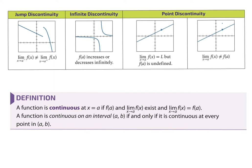Jump discontinuities are visually easy to see and functionally are typically a piecewise function where the endpoints don't meet. The next type is an infinite discontinuity — a non-removable discontinuity that creates an asymptote. Anytime you have a non-removable discontinuity, the denominator doesn't cancel out when factored, there's a zero down there, and you go infinitely in one direction getting super close but never touching it.